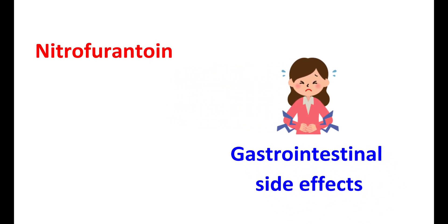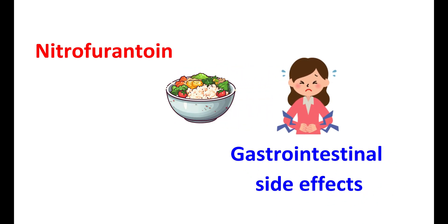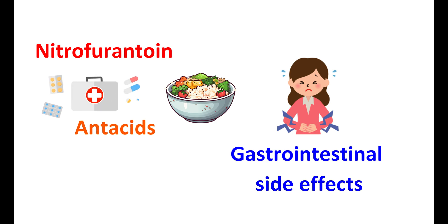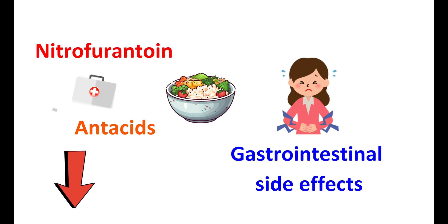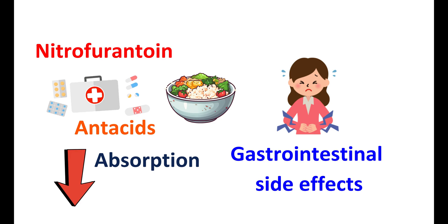Now let us see the precautions of this medication. Nitrofurantoin can produce a few gastrointestinal side effects, that's why it is preferred to be taken with food. Food can reduce these side effects, increase tolerance, and improve drug absorption. It is also recommended that the complete course of Nitrofurantoin should be completed. When taking antacids, particularly those containing Magnesium Trisilicate, they can reduce the rate and extent of absorption of Nitrofurantoin.